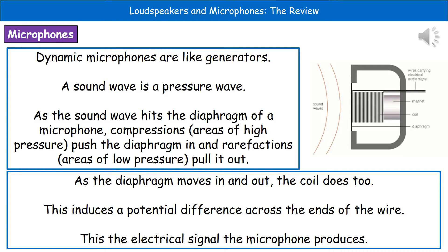The first type of microphone is what's called a dynamic microphone, like the one I'm using to record these videos. Dynamic microphones work rather like generators. There's a diagram on the right showing their setup: a magnet with a coil of wire surrounding it, and at the front, in contact with that coil of wire, is a component called a diaphragm.